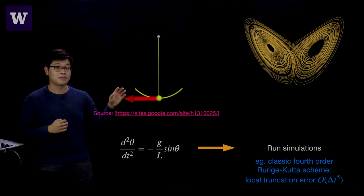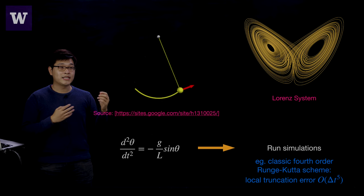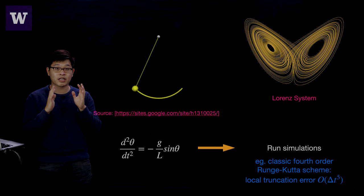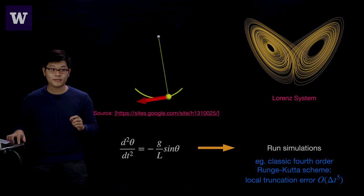This error accumulation makes the simulation of chaotic systems very challenging. For example, this Lorenz system — chaotic systems are very sensitive to initial conditions. Any discrepancies in the initial time frame will be exponentially expanded and cascaded into the future. That's the problem.